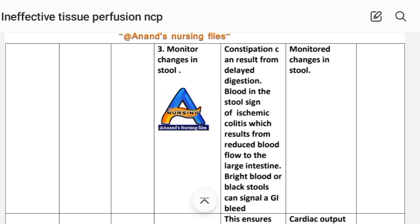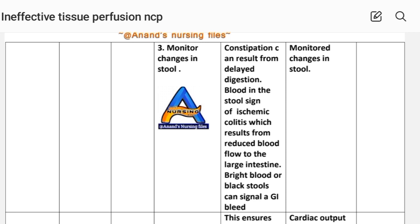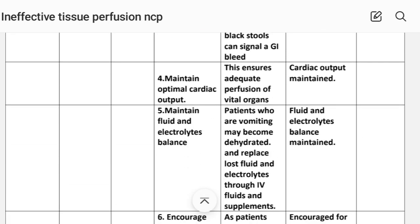Third intervention: monitor changes in stool. Rationale — local constipation can result from delayed digestion; blood in the stool is a sign of ischemic colitis resulting from reduced blood flow to the large intestine; bright red blood or black stool can signal a GI bleed. Implementation: monitor changes in stool.